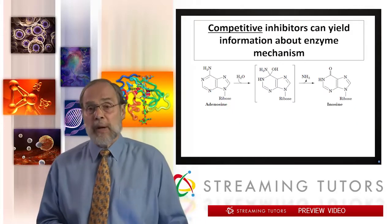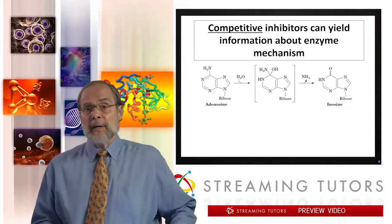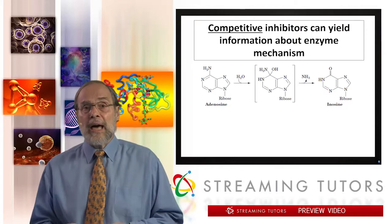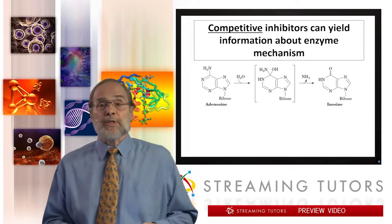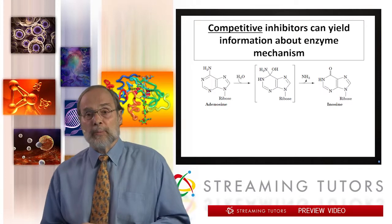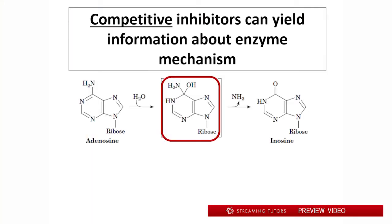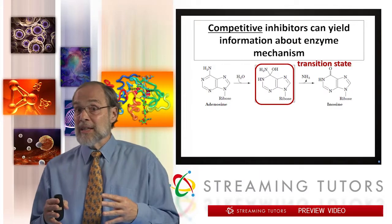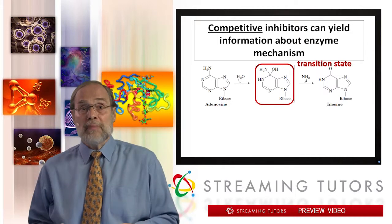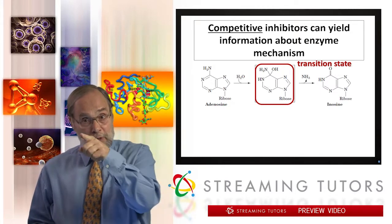Here is a slightly more complex reaction — the deamination of adenosine to produce inosine. You're removing an amino group and replacing it with a carbonyl oxygen, essentially bringing in a water and kicking out an amino group. The intermediate here is the transition state — not quite inosine, not quite adenosine, but something in between. The free energy of achieving the transition state is the fundamental thing that limits reaction rates, and what enzymes do is reduce that activation energy. We can use inhibitor studies to test hypotheses for how that's happening.